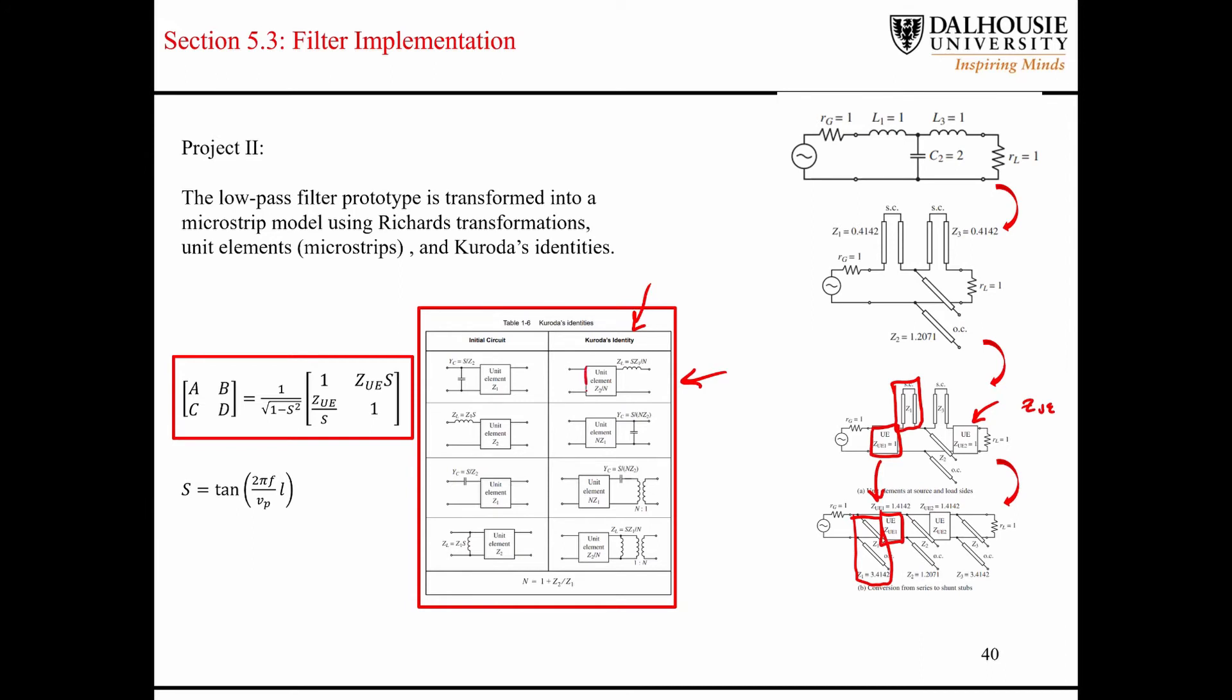You can see that when you have a unit element next to a series inductor, then that is exactly equivalent to having a capacitor on the left-hand side of the transmission line and a neighboring transmission line segment with a completely different characteristic impedance. The admittance of this capacitor is defined by S over Z2 and the characteristic impedance of this transmission line here is defined by Z1.